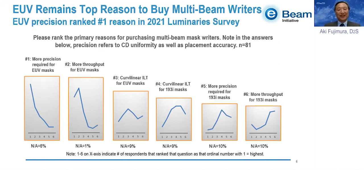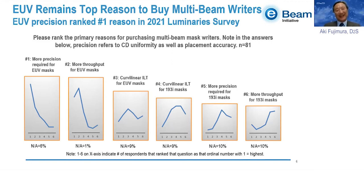Then 193i needs curvilinear even more, but maybe the multi-beam mask riders are busy doing all the EUV masks, so EUV takes priority. Maybe that's the reason — that's just my speculation.